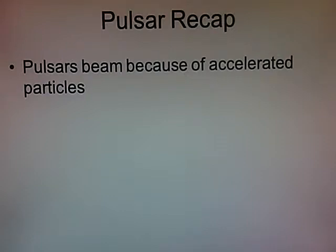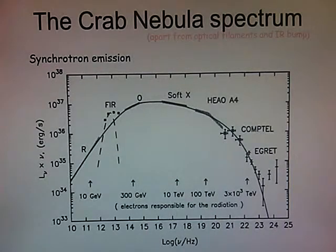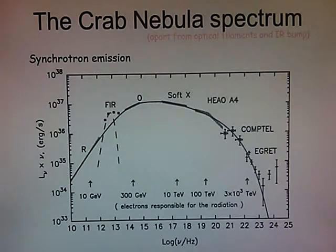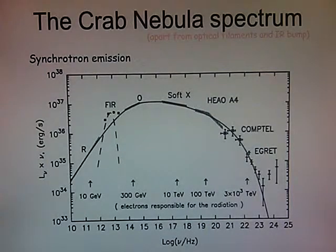So where are the accelerated particles coming from? Why are you getting that beaming? The dominant thing that's really important is the magnetic field. We told the story that we get synchrotron emission coming from the magnetic field and these charged particles accelerating around. We can see that in the spectrum for the Crab Nebula. Depending on what wavelength you observe, you get different portions of this synchrotron spectrum. The luminosity coming out is something like 10 to the 37th ergs per second as a peak intensity.